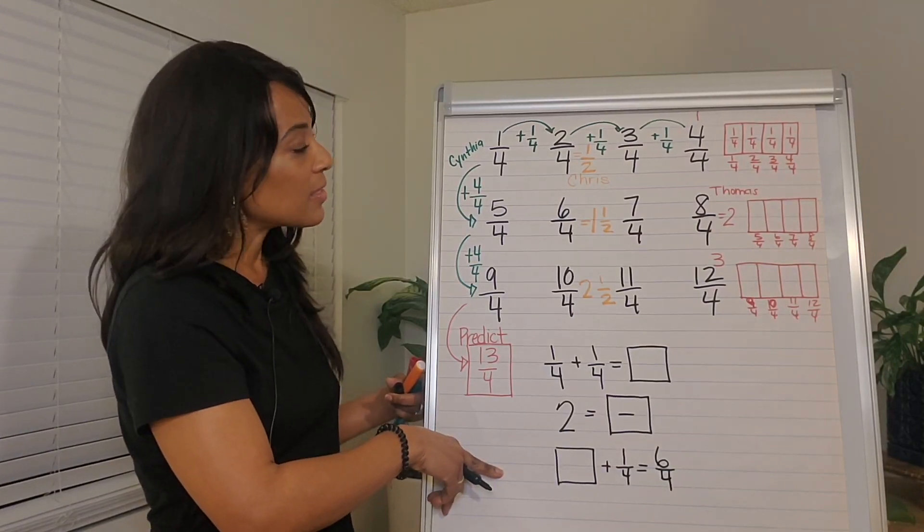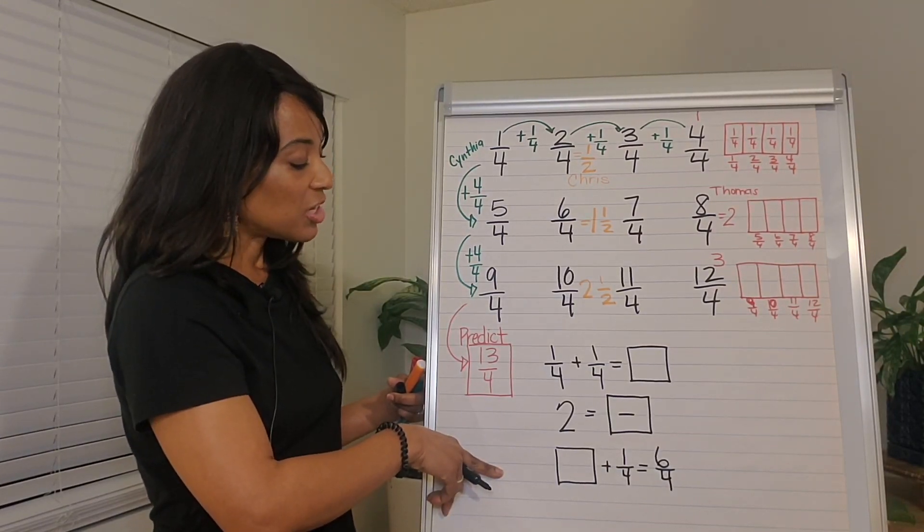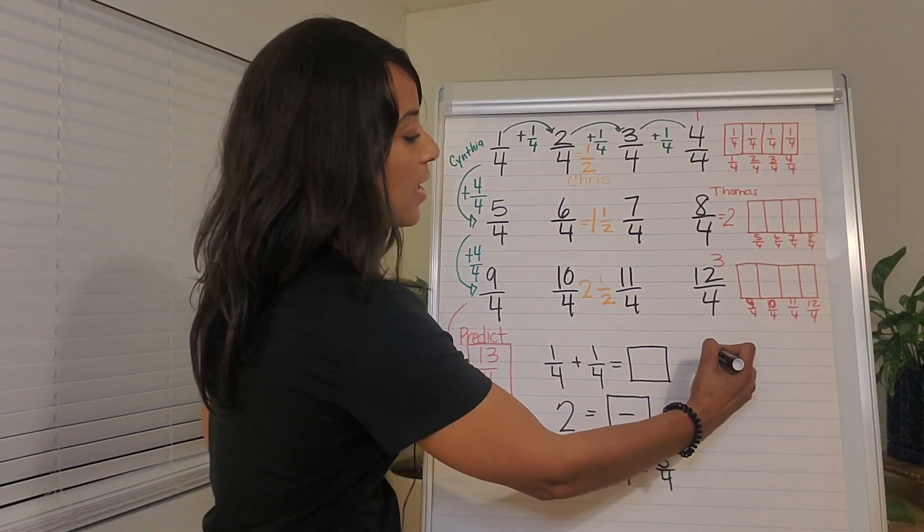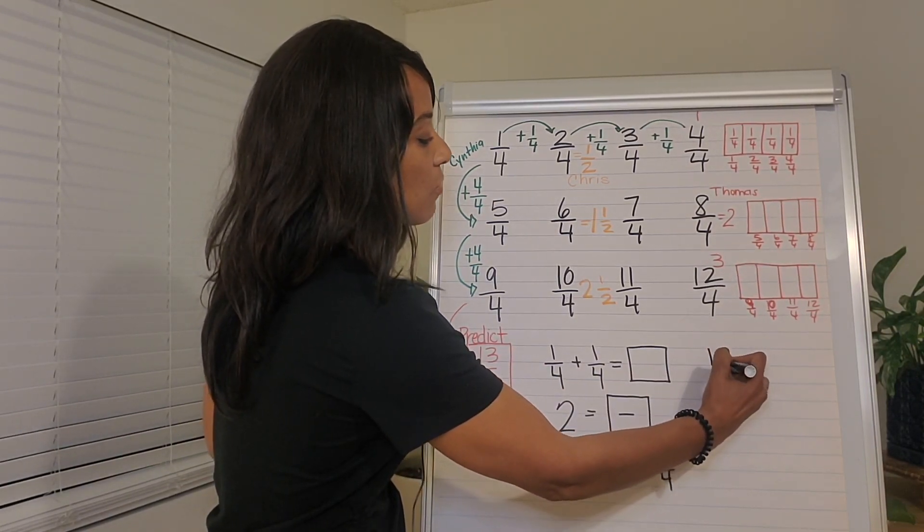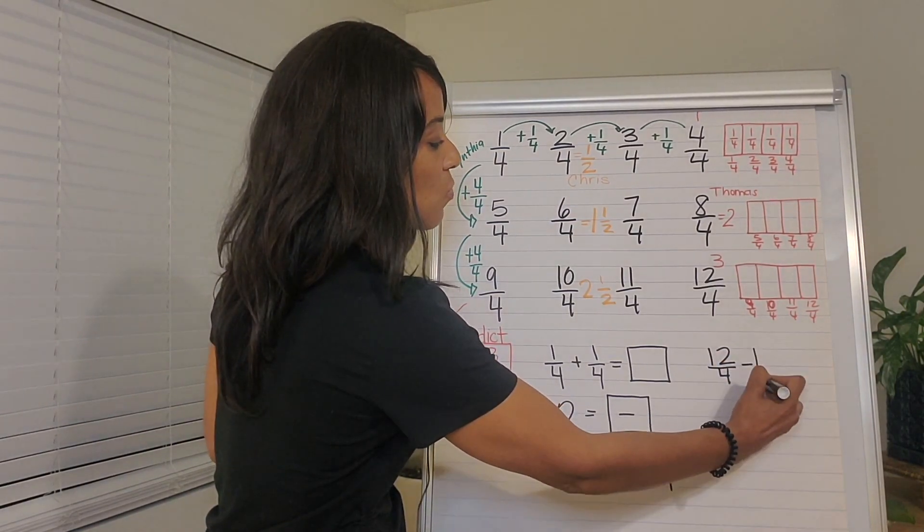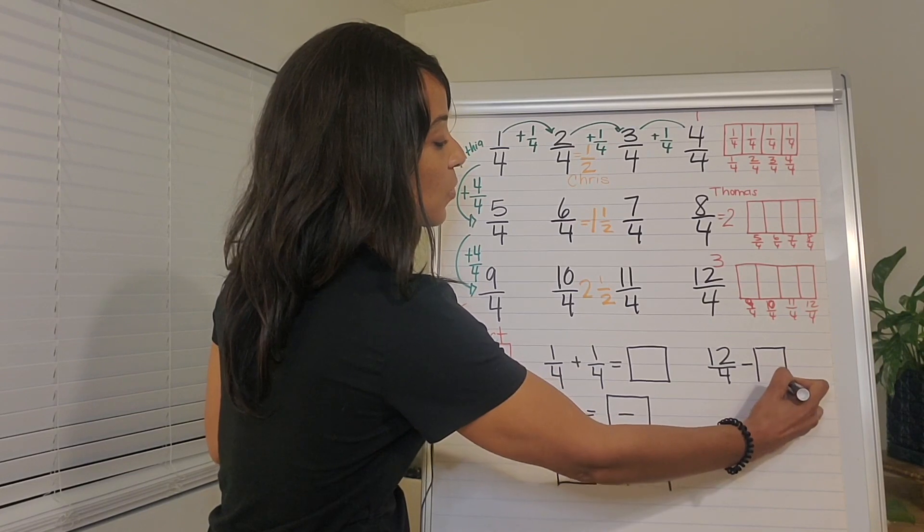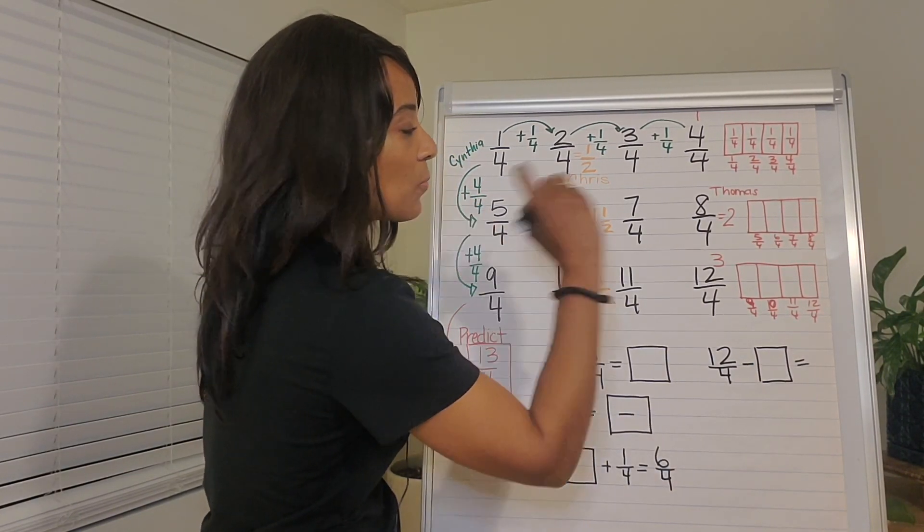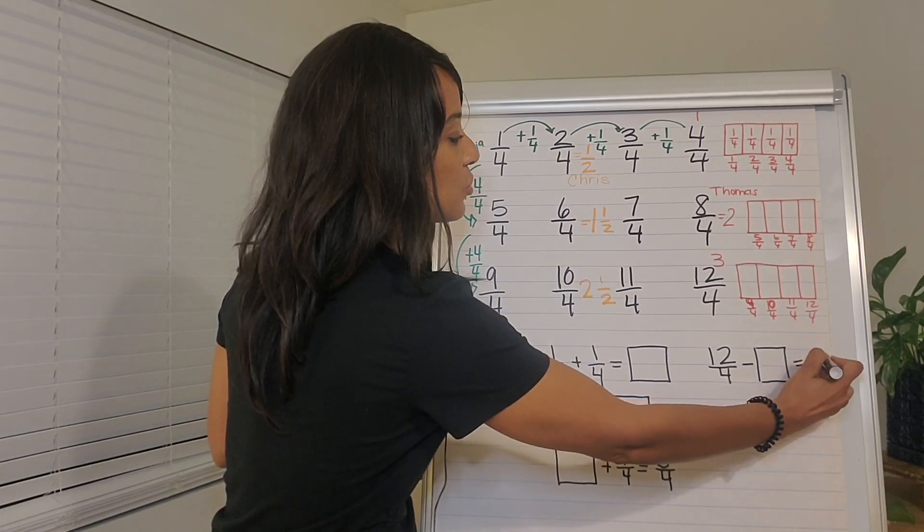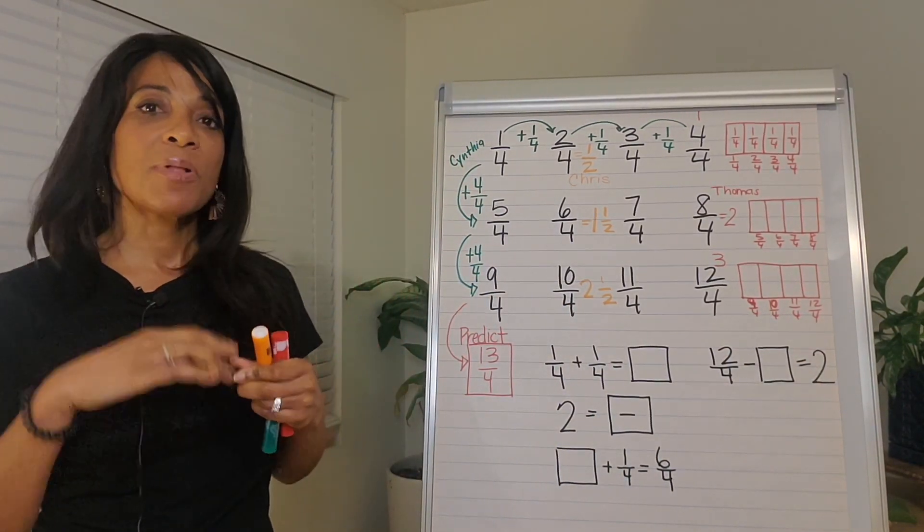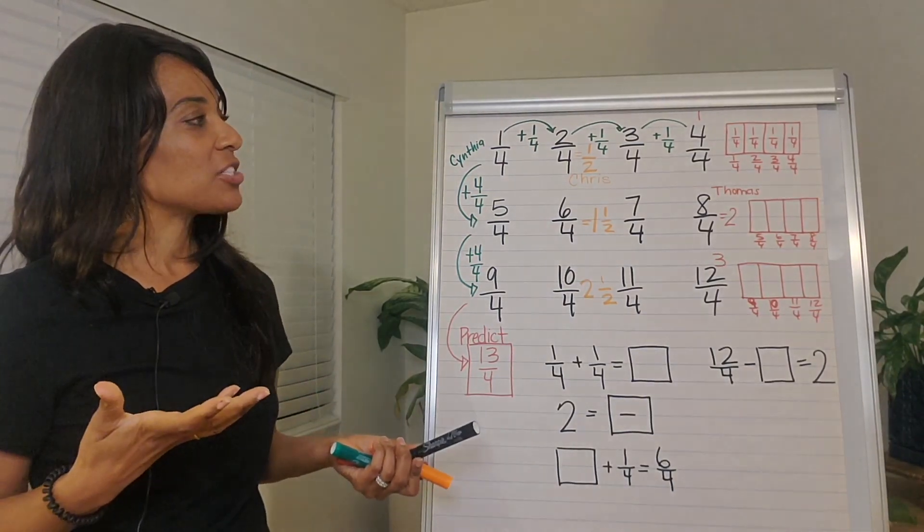And then let's see, we've got some addition here. We've got some equivalent fractions. We can even do some subtraction. We could do something like 12 fourths minus what? This could be a challenging one will get us to two wholes.